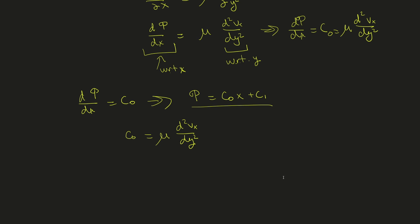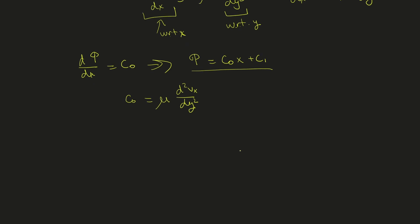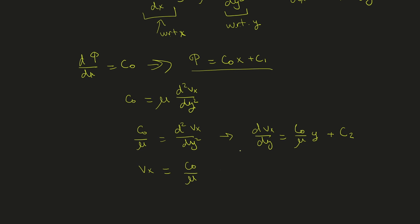For the velocity equation, we solve c0/mu = d²vx/dy² using two integration steps. The first integration gives dvx/dy = (c0/mu)*y + c2. Integrating again gives vx = (c0/mu)*(y²/2) + c2*y + c3. We now have four integration constants — c0, c1, c2, c3 — and we have four boundary conditions to solve them.